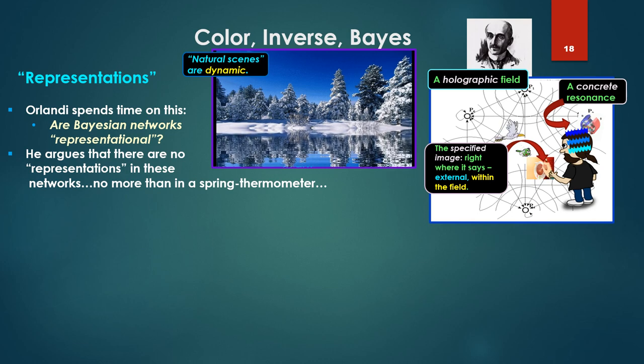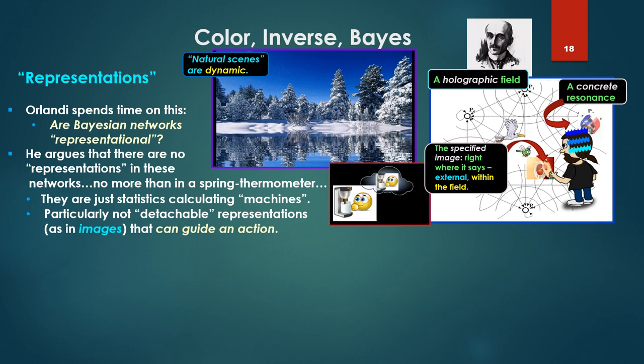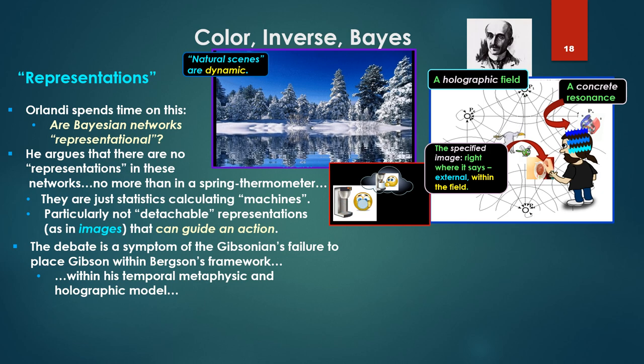Orlandi, who wrote the paper I mentioned initially, spends some time on the subject: are Bayesian networks representational? Now he's not for Bayesian networks, so he's arguing against this. He argues that there are no representations in these networks, no more than a spring thermometer, they're just statistics, calculating machines. Particularly not what are called detachable representations, that is as images that could guide an action such as when reaching out for that coffee machine with a coffee cup. The debate, however, is a symptom of the Gibsonians' failure to place within Bergson's framework, within his temporal metaphysic and holographic model.